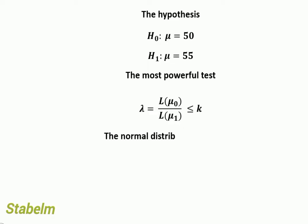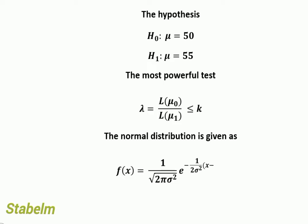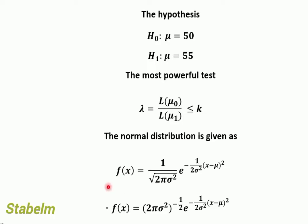We look at the density function of the normal distribution: f(x) = (1 / √(2πσ²)) · exp(−(1/2σ²)(x − μ)²). We can rewrite this by bringing the denominator up: f(x) = (2πσ²)^(−1/2) · exp(−(1/2σ²)(x − μ)²), where the negative half power reflects the moved denominator.